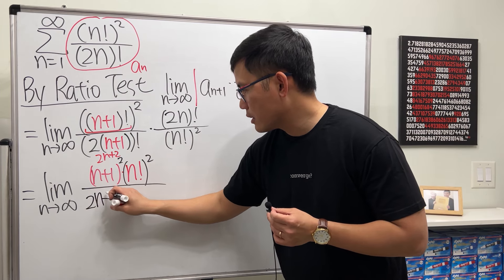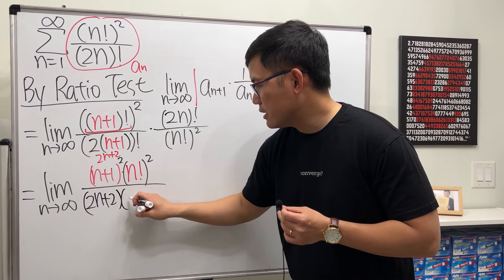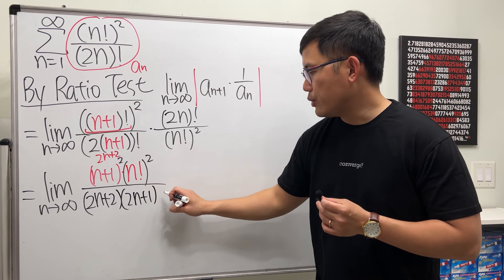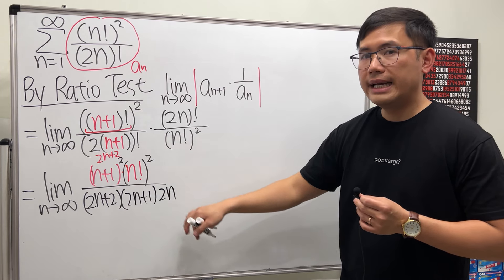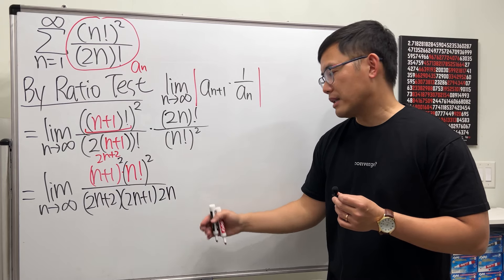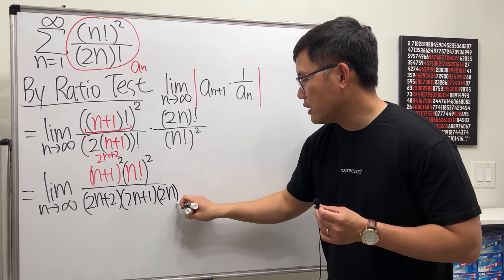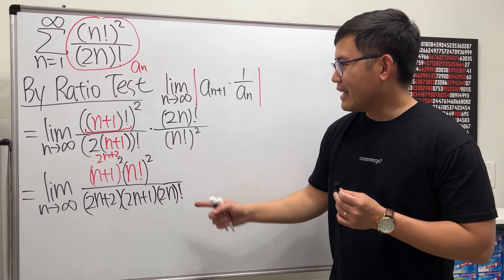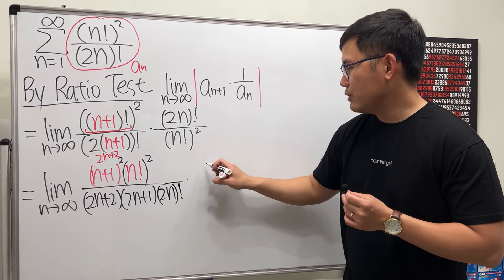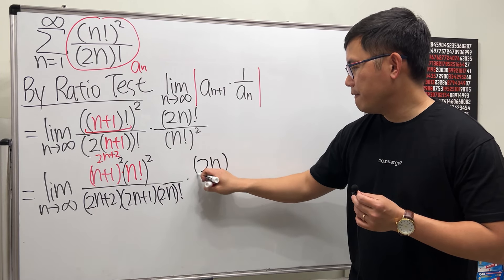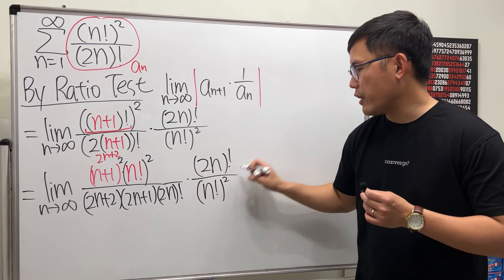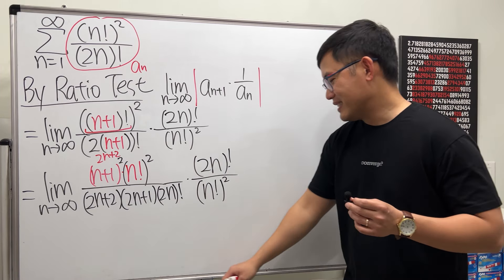And then you do it again: 2n, and then you do it again and you do it again. But that is just going to give us 2n and then factorial. Now this and that—just keep it: 2n factorial over n factorial and then squared. And now here is the best part.